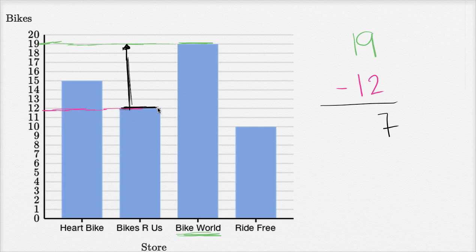you would see that you would have to go from 12 to 19, or you would have to add seven bikes. Or that Bike World has seven more bicycles than Bikes Are Us.